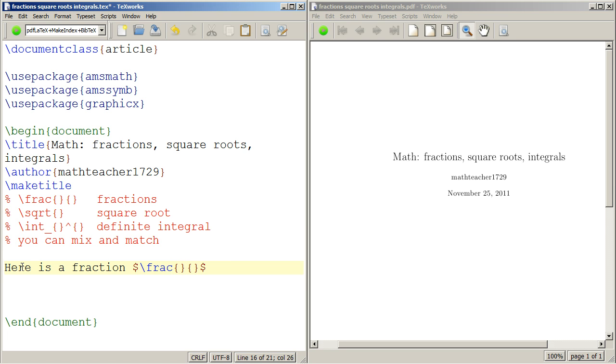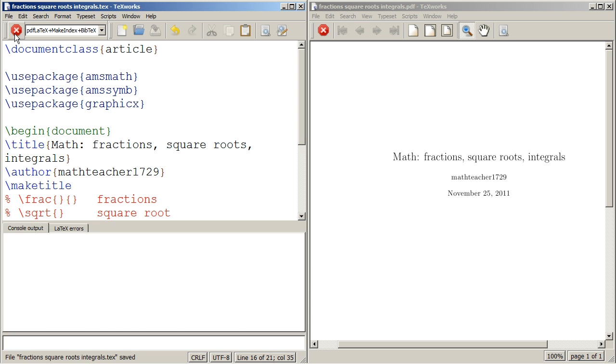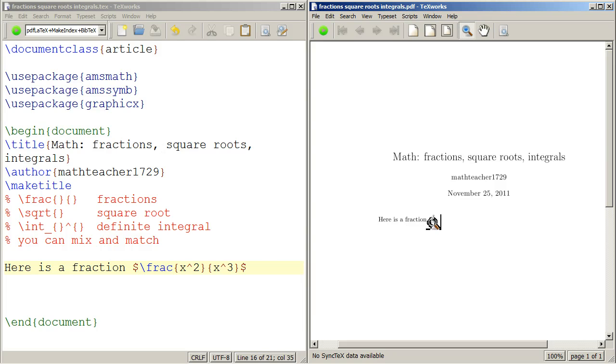Fractions are two sets of braces. The top is the numerator, so let's put like x squared in the numerator. And in the bottom, we'll put, I don't know, x to the third. And when we hit typeset, you can see it.